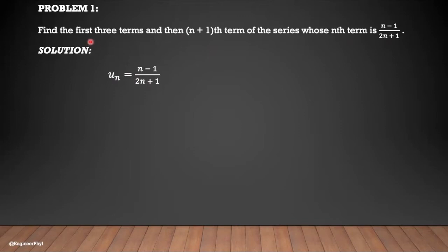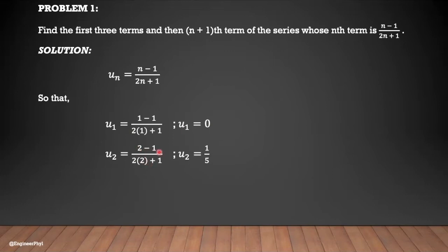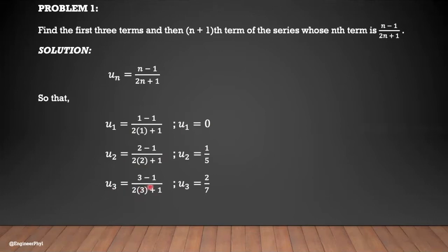Since we are asked to solve for the first three terms, we are going to replace n. For the first term, n = 1: u₁ = (1−1)/(2·1+1) = 0. For the second term, n = 2: (2−1)/(2·2+1) = 1/5. For the third term, n = 3: (3−1)/(2·3+1) = 2/7.